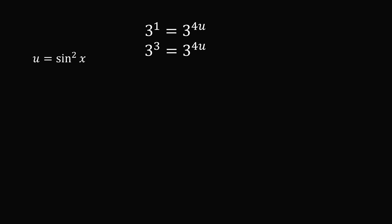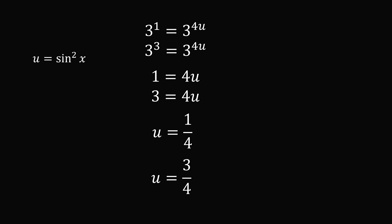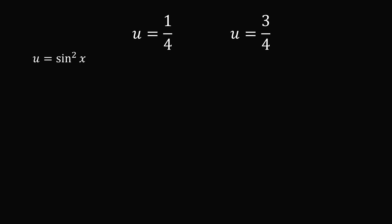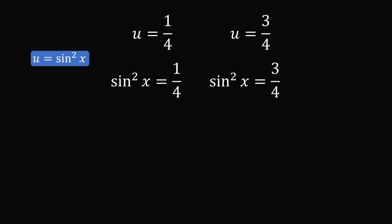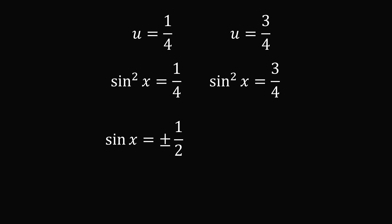So we want to equate these exponents. So 1 is equal to 4u and 3 is equal to 4u. This gives that u is equal to 1 over 4 and u is equal to 3 over 4. So now we just need to transform back to x. Since u is equal to sine squared x, sine squared x is equal to 1 over 4 and sine squared x is equal to 3 over 4. Taking the square root of both sides, we get sine x is equal to plus or minus 1 half, and sine x is equal to plus or minus root 3 over 2.